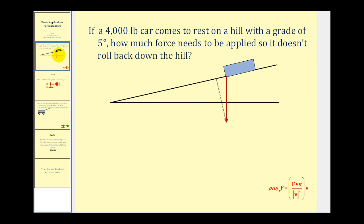If a four thousand pound car comes to rest on a hill with a grade of five degrees, how much force is needed to be applied so it doesn't roll back down the hill? So the grade is five degrees, so let's go ahead and label this. And since the car weighs four thousand pounds, this red vector here would be our force vector. Or we could let the x component equal zero and the y component equal negative four thousand.